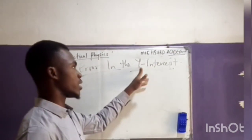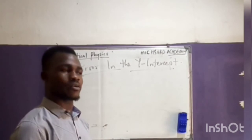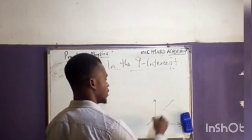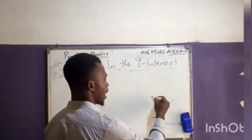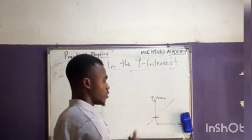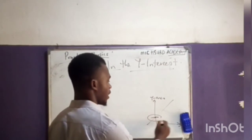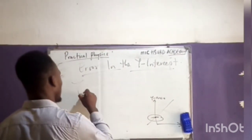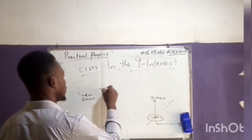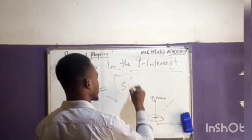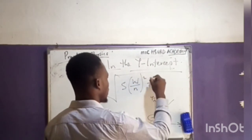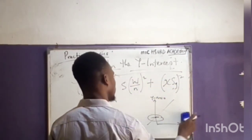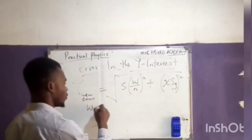That covers the error in the slope. Now for the error in the y-intercept — sometimes we may be required to calculate the error in the y-intercept after plotting our graph. The y-intercept is the point where the line of best fit cuts the y-axis. The formula for the error in the y-intercept is: the square root of (w/n)² plus (x̄ · Sg)², where w is the vertical scatter and n is the number of points.